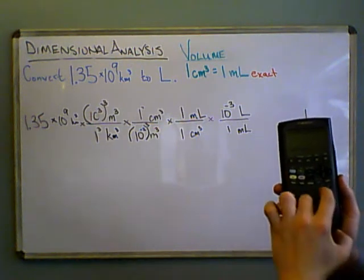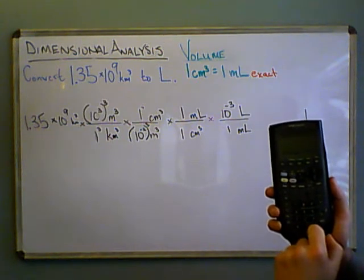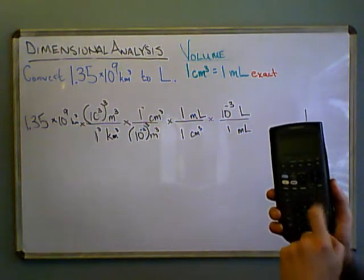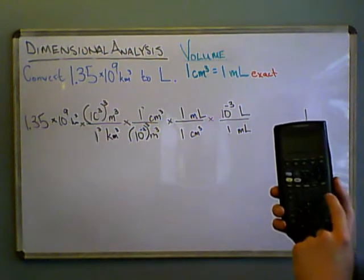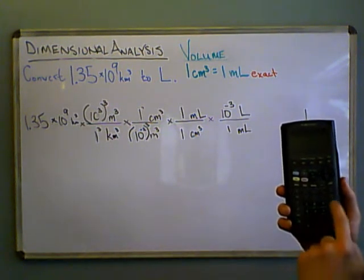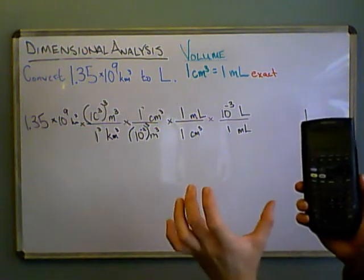Ten to the third, so that's carat three, in parentheses, and now I take that to the third by pressing carat three, and that's divided by one, times one, divide by, and now we have the parentheses.